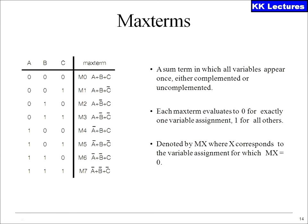A max term is a sum term in which all variables appear once either in complemented or uncomplemented format. Each max term evaluates to 0 for exactly one variable assignment and 1 for all others. The different notations for a 3-bit variable set A, B, C are shown in a tabular column, with max terms on the right-hand side. The notation for a max term is capital M.